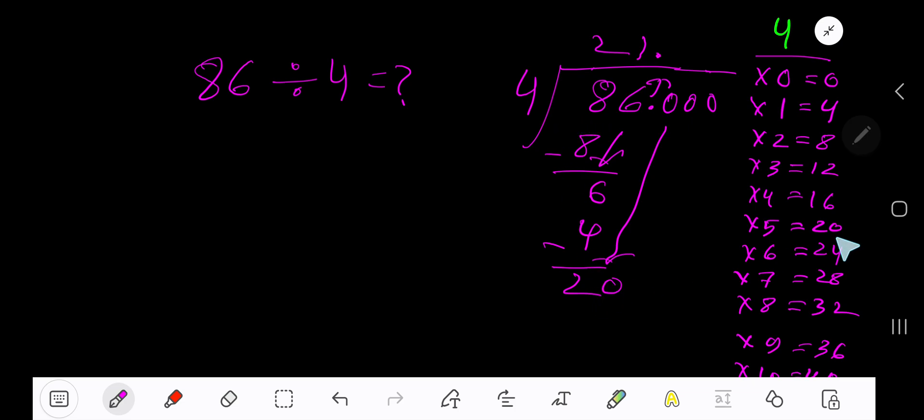4 goes into 20 how many times? 5 times. 5 times 4 is 20. Subtract, 0. As our remainder is 0, we are done. Our answer is 21.5.